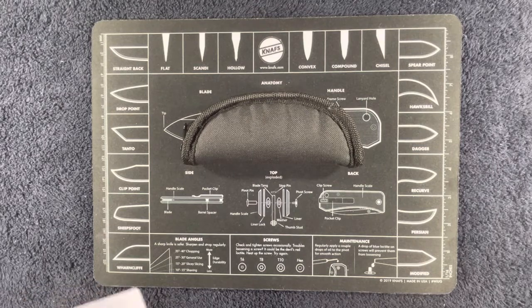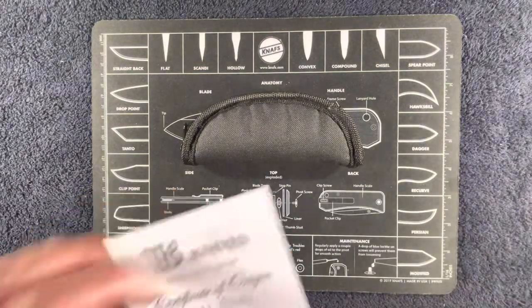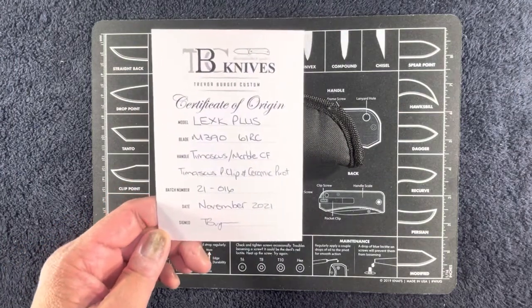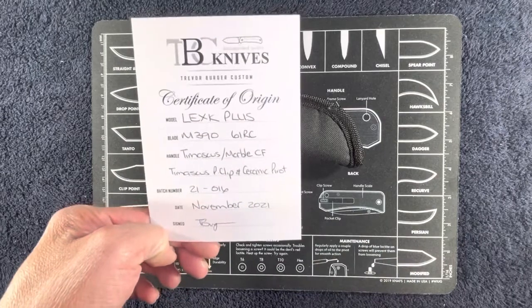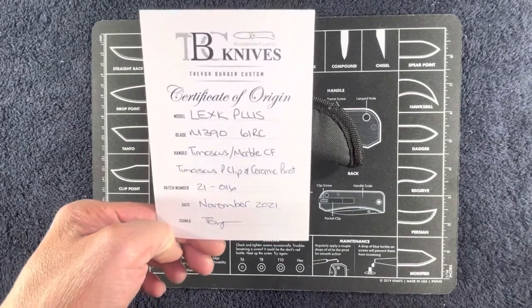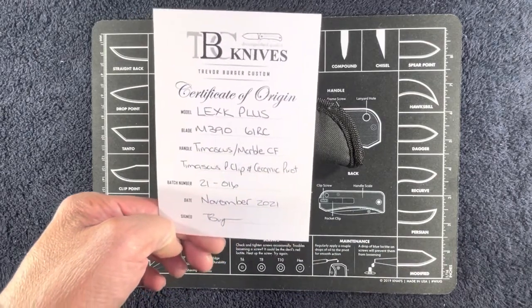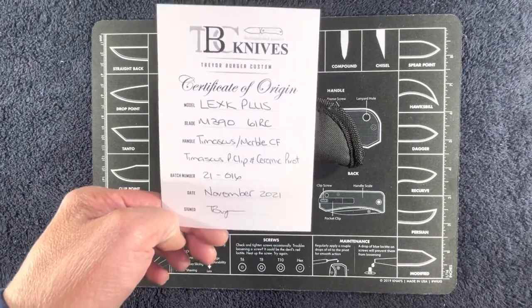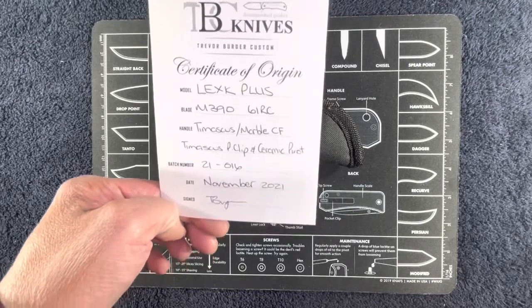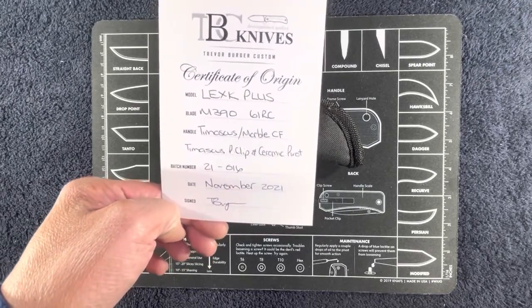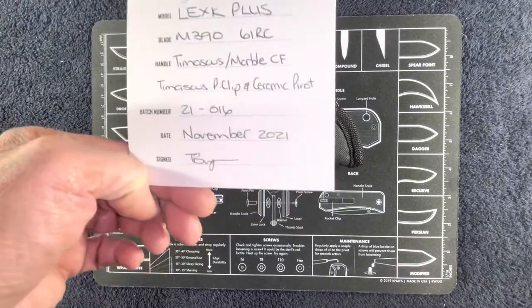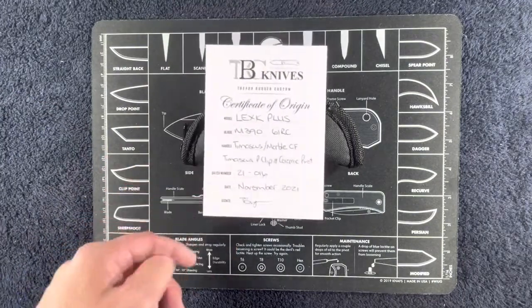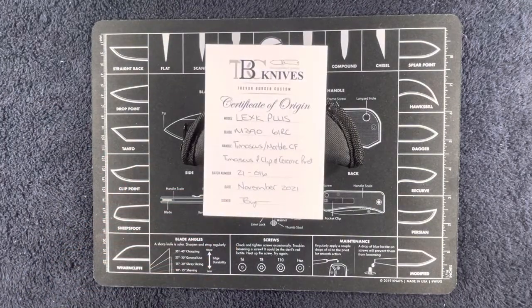The knife we're going to be taking a look at is from knife maker Trevor Burger. Trevor Burger made this Lex K Plus with an M390 blade. We've got Damascus and marble carbon fiber for the handles plus Damascus pocket clip and ceramic pivot. Made November of 2021, there is Trevor Burger's famous signature.